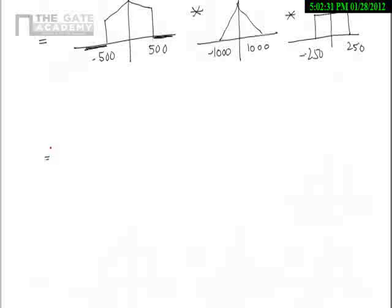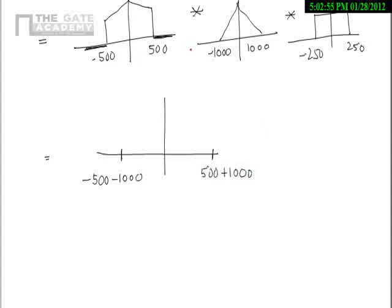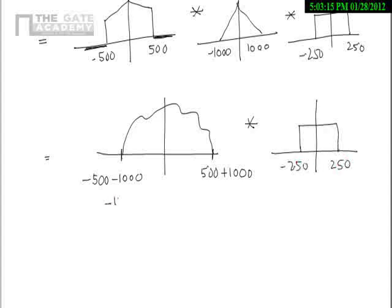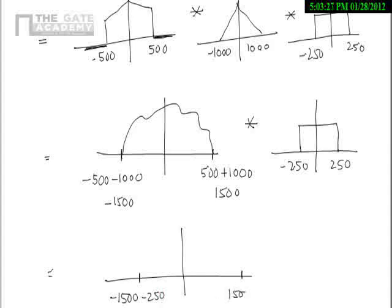We have two convolutions remaining. We don't need to worry about the shape — we just need the highest frequency. When you convolve the signal from minus 500 to 500 with the rectangle from minus 1000 to 1000, the support of the resultant is from minus 500 minus 1000 to 500 plus 1000, giving minus 1500 to plus 1500. Then convolving with the rectangle from minus 250 to 250 gives support from minus 1500 minus 250 to 1500 plus 250.